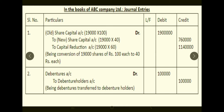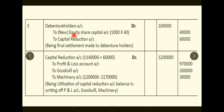You transfer the debentures to personal accounts of individual holders. Debentures Account on the liabilities side — whatever balance exists — is transferred to Debenture Holders Account, i.e., Rs.1,00,000. Then Debenture Holders Account is debited, and Equity Share Capital Account is credited for 1,000 shares × Rs.40 = Rs.40,000. The remaining Rs.60,000 is transferred to Capital Reduction Account.